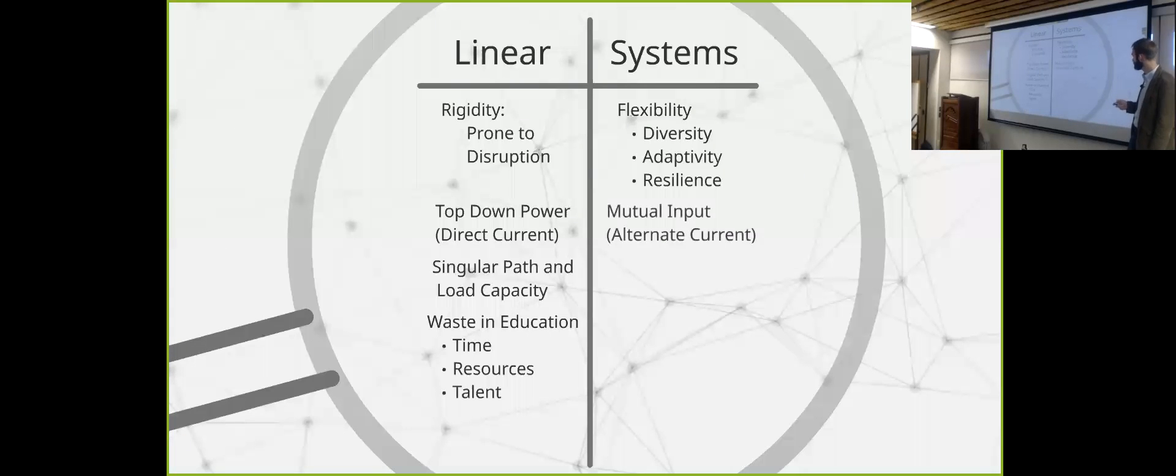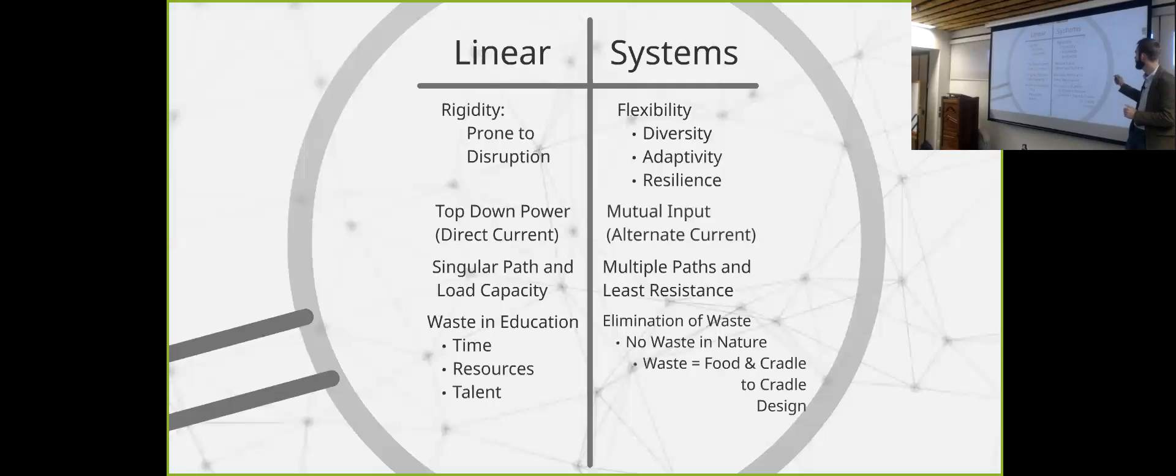And so that brings us back. So opposite of rigidity, you have flexibility, diversity, adaptivity, and resilience. You have mutual input. So looking as opposed to a DC or an AC current, where it can go both ways between learner and teacher. Multiple paths and least resistance. So giving a student multiple options in which competencies to choose from. And the student can then choose something that they find the most able to understand at that point in time. Imagine trying to teach a concept to a child at the beginning of class that they don't understand. Yet they might have an easier time understanding a concept towards the end of that class. But if they can't get over that initial concept up front, they're never going to get that.